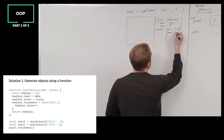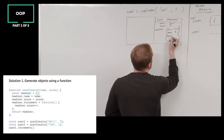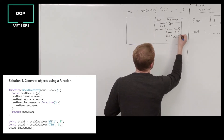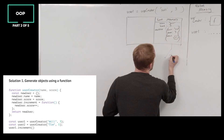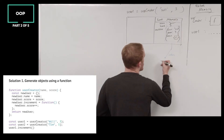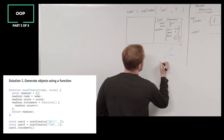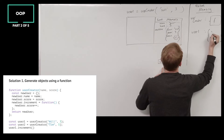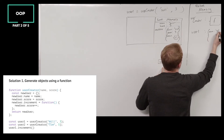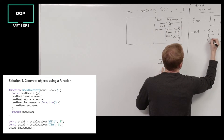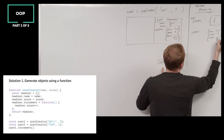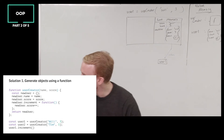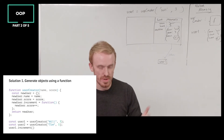We're creating a property score with the value of 3, and then we're creating a method called increment with a function definition. And the final line of the function: we're returning the new user object, returned out into global memory where it is stored in user1. User1 gets filled in - no longer undefined - with this object: name will, score 3, and increment is a function. We've achieved the same thing we did when we hand-wrote the object, but now we did it with just a single line - userCreator function being called returning out an object.